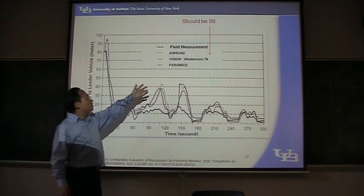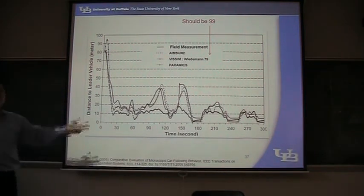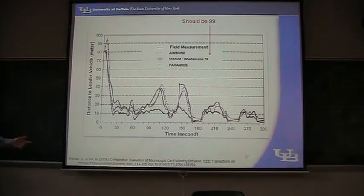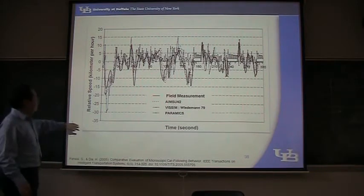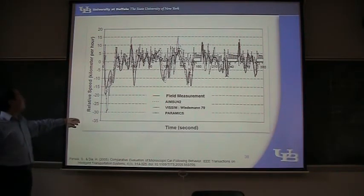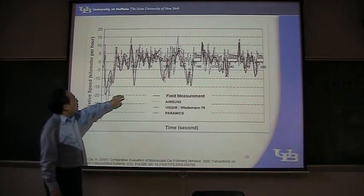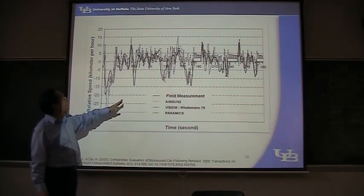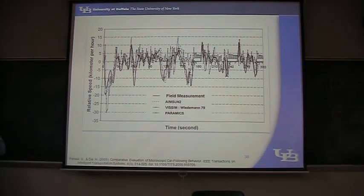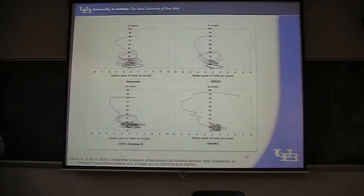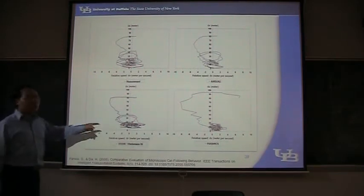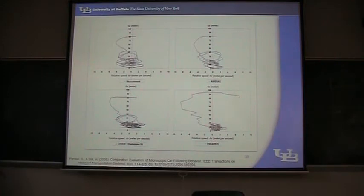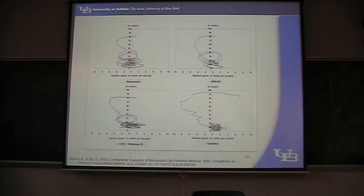In this paper, as I mentioned, they have a 79 and 99 model, but they use 79 — actually it should be 99, that's a typo. This is the ability to replicate the speed difference, delta V. The result is PARAMICS is the worst. MSOM and VISSIM are almost as good as each other. This is the third curve — delta V and delta X for the following vehicle. This is the field measurement, and their relationship goes like this. MSOM result is very similar; VISSIM result is also very similar. But PARAMICS is different.